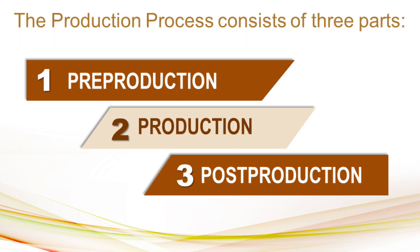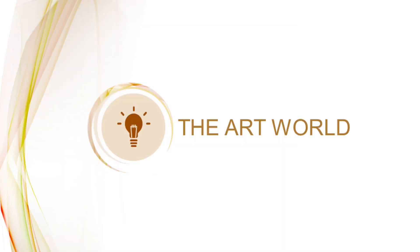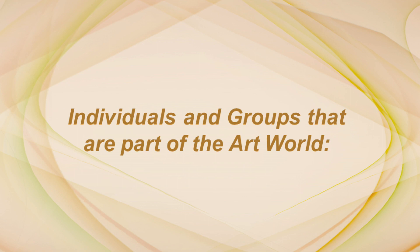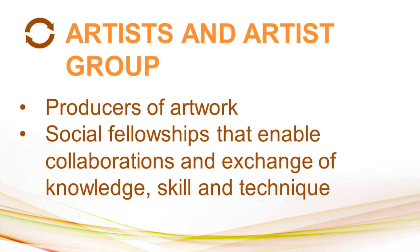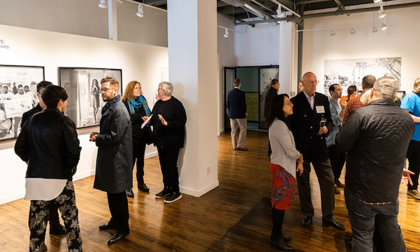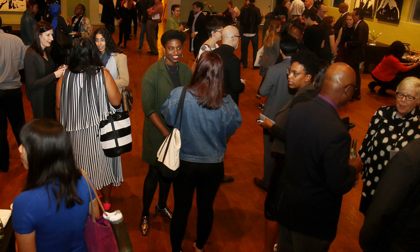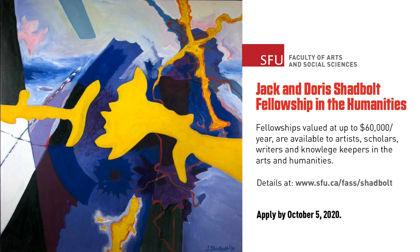So again, we have three parts of the production process: pre-production, production, and post-production. Let's now look at the art world — who are the individuals and groups that are part of it? There are artists and groups of artists who are producers of artwork. There are social fellowships that enable collaborations and exchange of knowledge, skill, and technique — times when artists gather and share and collaborate. Of course, there are also producers who want to support our artists, such as the Jack and Dory Shadbolt Fellowship in the Humanities, for example, in October 2020.